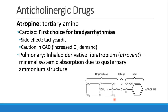Atropine is the primary anticholinergic drug — the primary muscarinic antagonist. Many times it's your first choice for life-threatening bradyarrhythmias. A side effect, not surprisingly, is tachycardia, so caution should be used in patients who have coronary disease because the tachycardia will increase oxygen demand. In the lungs, we expect to see bronchodilation. An inhaled derivative exists called ipratropium, with the brand name Atrovent — sort of like atropine.